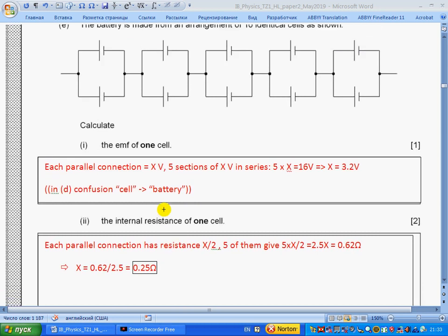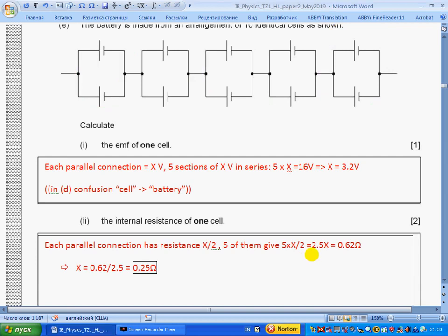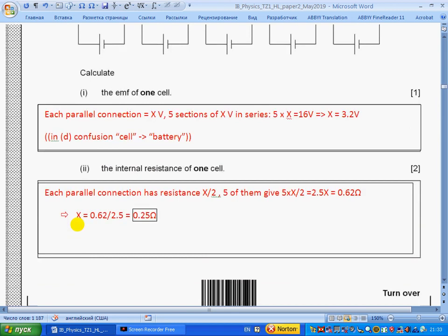Part ii: The internal resistance of one cell. If we call internal resistance of one cell X, then internal resistance of parallel connection is X over 2. We have five of them connected in series, so we have 5 times X over 2, and this 2.5X equals 0.62. From this we get the internal resistance of one cell: 0.25 ohms.